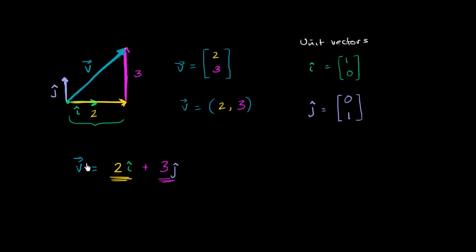So vector v you could represent as a column vector (2, 3), or you could represent it as 2 times î plus 3 times ĵ. î is the unit vector in the positive horizontal direction — if you want to go the other way, you multiply by a negative — and ĵ is the unit vector in the vertical direction. As we'll see in future videos, once you go to three dimensions, you'll introduce a k̂. It's very natural to translate between these two representations: notice 2, 3 in both cases.